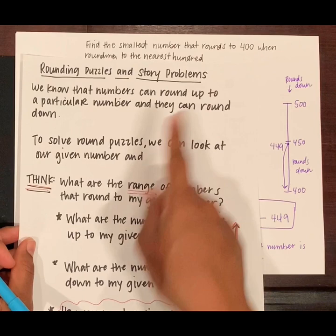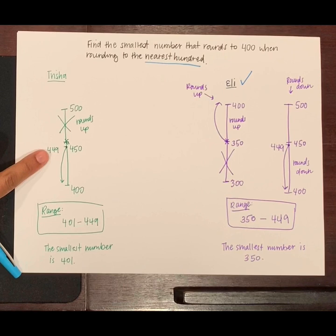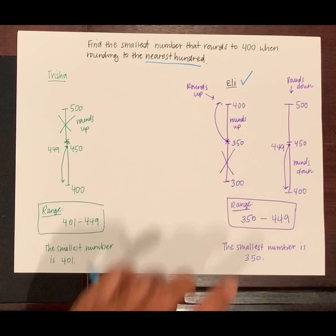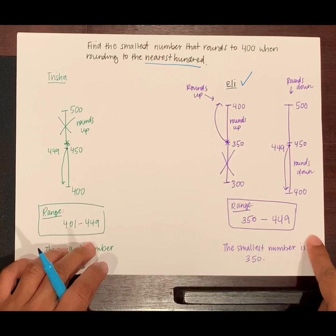Trisha was on the right track, but she only thought about the numbers that were higher than 400 that would round back down to 400. Eli thought about the numbers that both round up and round down. So, he had the complete range.